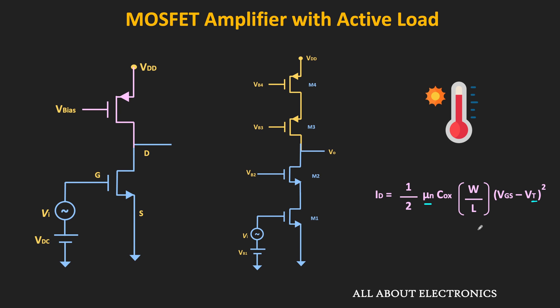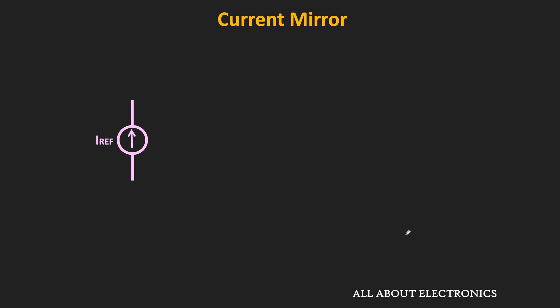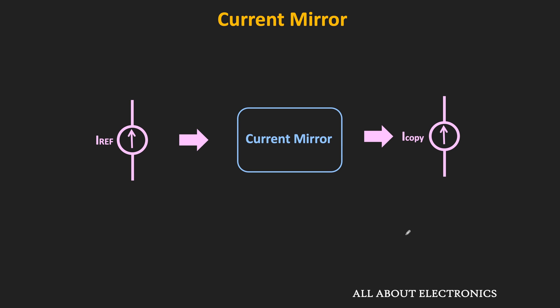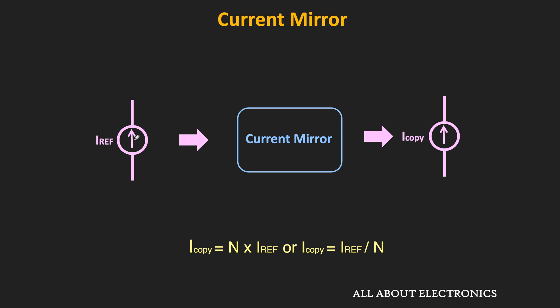So to overcome all these problems, what is actually done is a very stable current source is generated in the IC, and using the current mirror circuit, a copy or a number of copies of this reference current source is generated. The generated copy could be the same as the reference current source, or it could be a multiple or a fraction of this reference current source. Now let us see how this current mirror circuit is designed using the MOSFET.